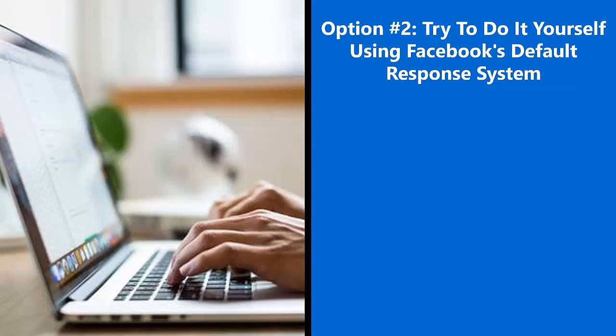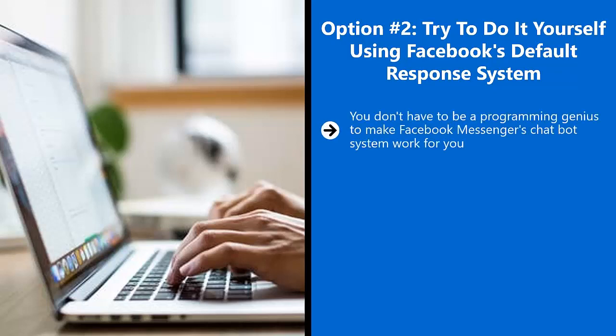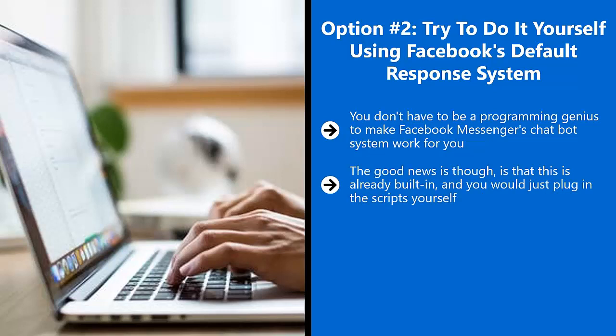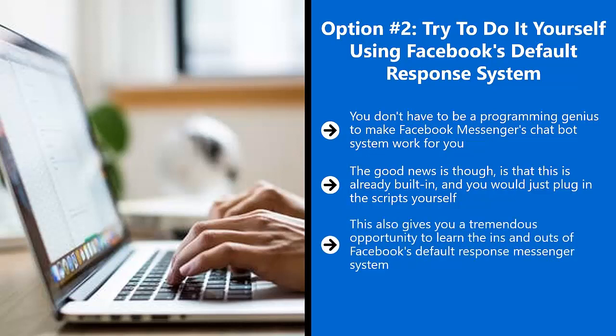You don't have to be a programming genius to make Facebook Messenger's chat bot system work for you. Facebook does allow an automated response system for its Facebook Pages — you have to turn on the feature and then get permission from Facebook; this is not automatic. The good news is that it's already built in and you just plug in the script yourself. This cuts down on cost and gives you a tremendous opportunity to learn the ins and outs of Facebook's default response Messenger system. You're basically turning it into your own response bot. The downside should be obvious — this option doesn't really unlock the full range of capabilities that Facebook Messenger automation brings to the table.